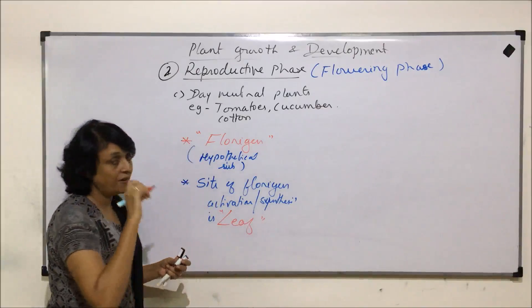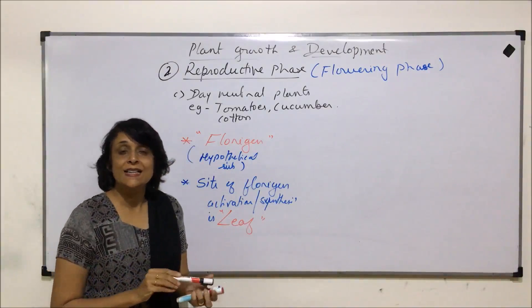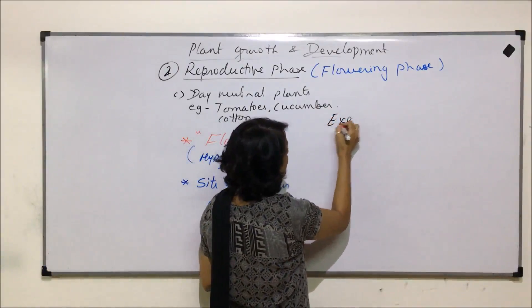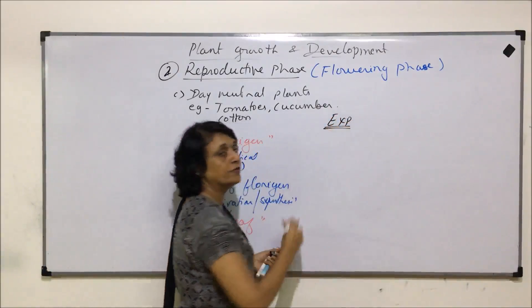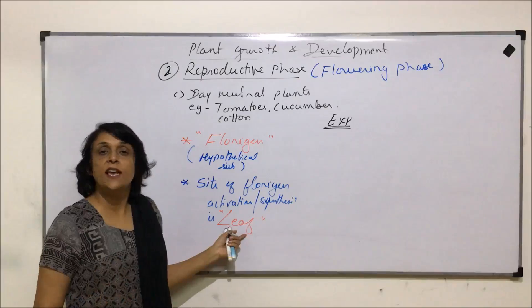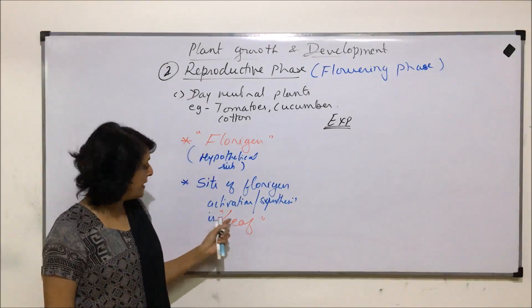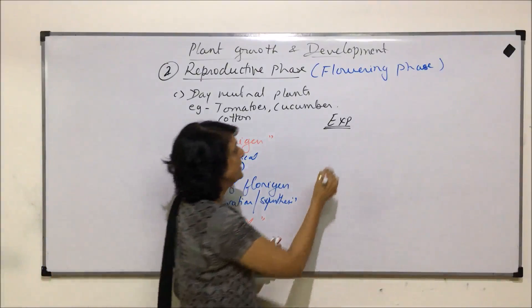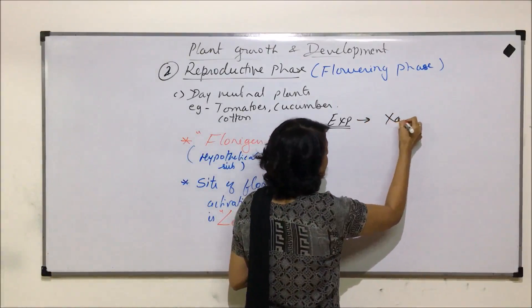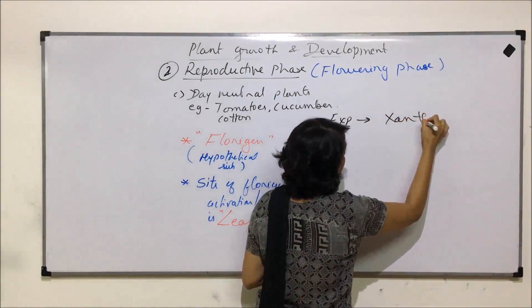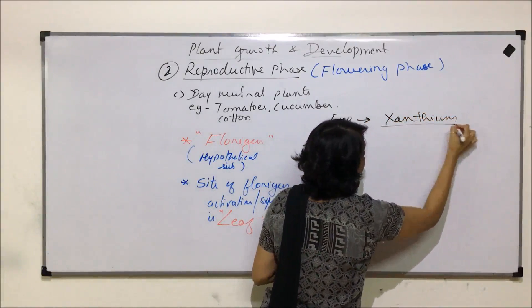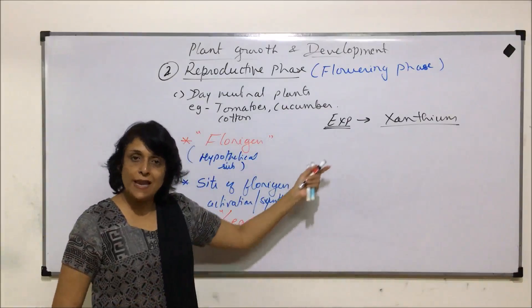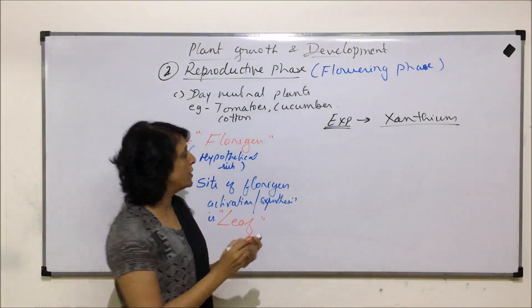Experiments were performed using Xanthium. The experiment proved that the substance which helps in flowering is present or is synthesized in the leaf. It was done on Xanthium — two plants of Xanthium were taken.